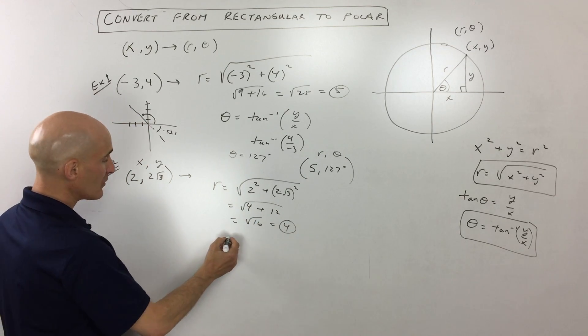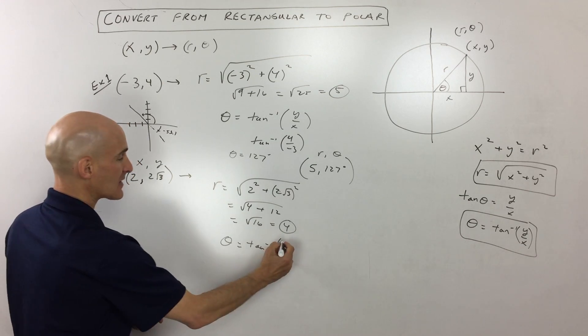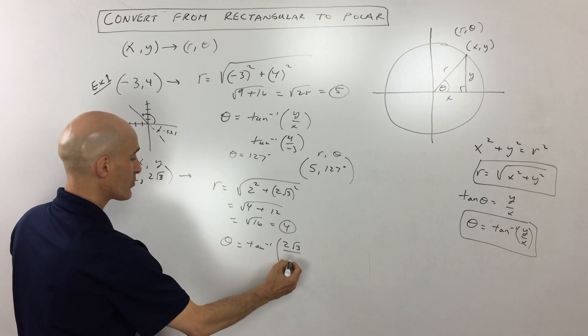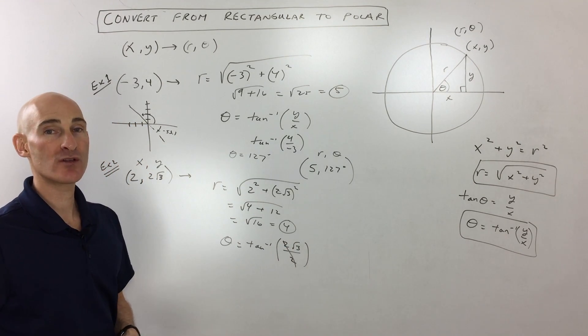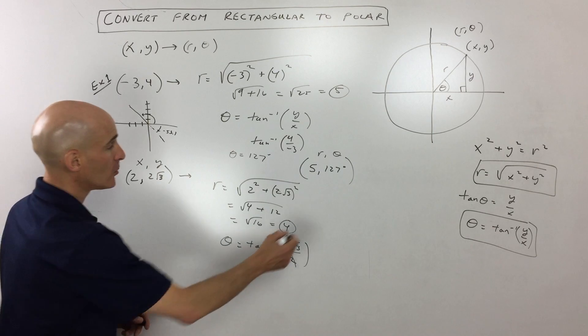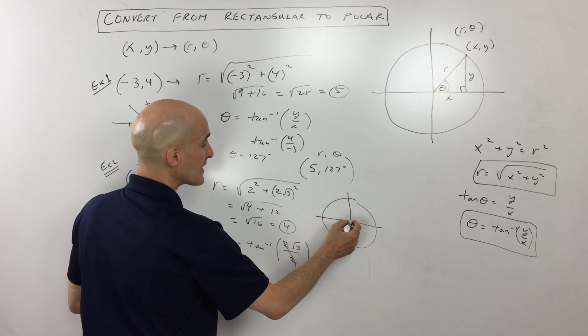And if we want to do our angle now, we're going to do the tangent inverse of y divided by x. So that's 2 root 3 over 2. You can see the 2s cancel. So where does tangent equal square root of 3? Well, you know from your unit circle that tangent is going to equal square root of 3. That's y over x.